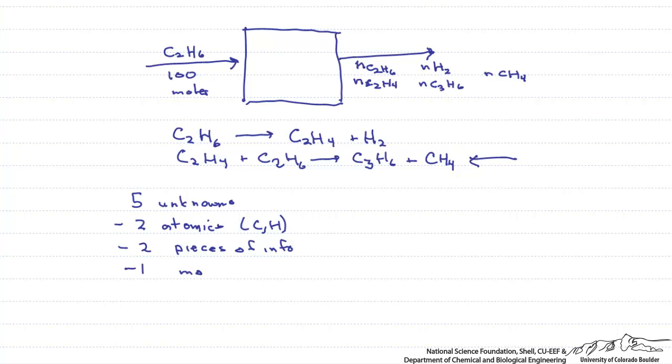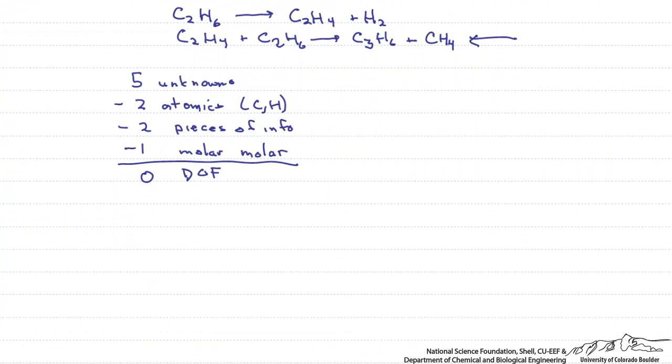So given that information, we see that our degrees of freedom are 0. So that means that this can be solved. So let's look at some of the equations that we are going to use to solve this.